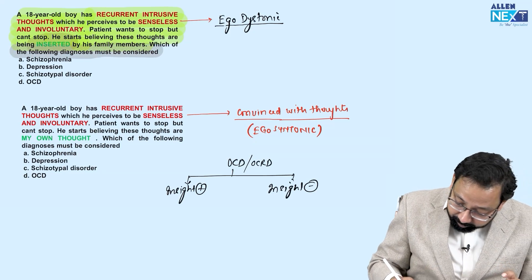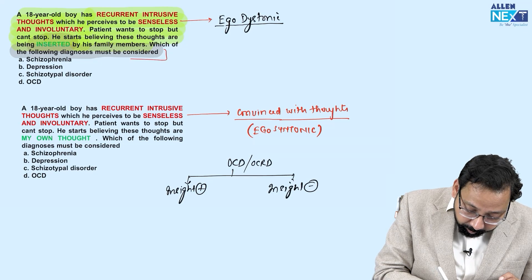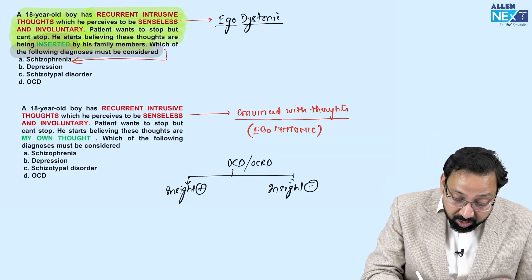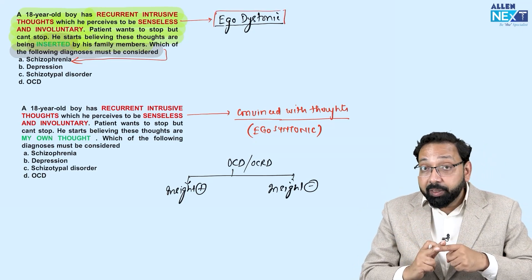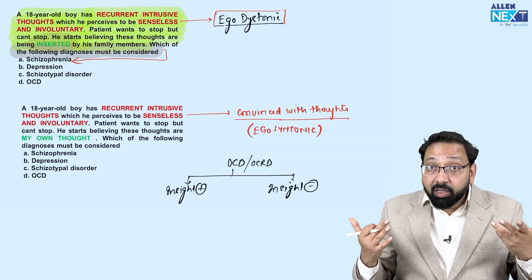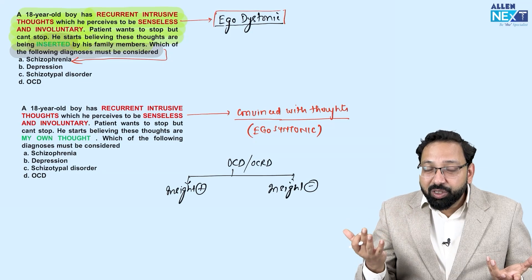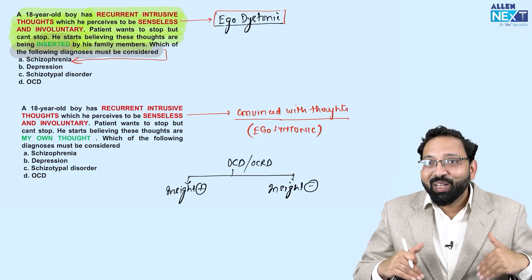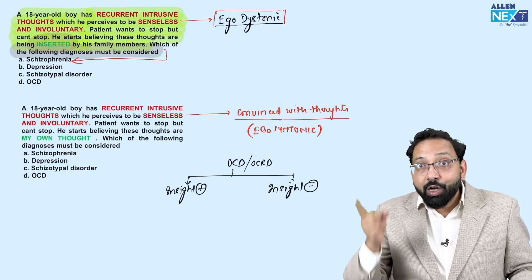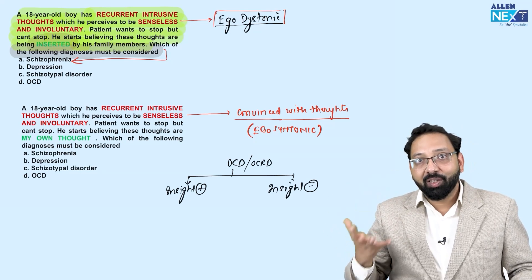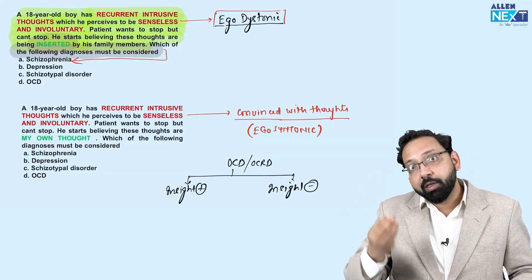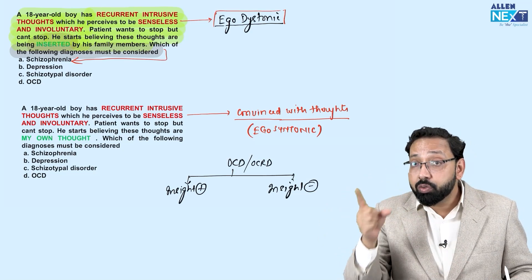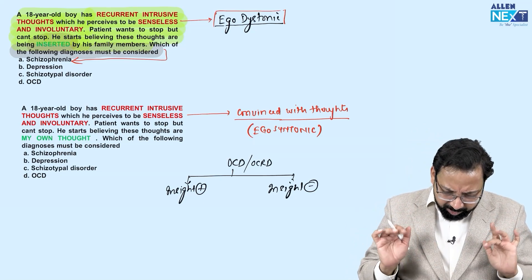The patient finding thoughts senseless means ego-dystonic — not agreeable to self. If a patient agrees with the thoughts, it is egosyntonic, just like delusions — a patient who believes they are the richest person agrees with that thought, making it egosyntonic. So the rule is: delusions are egosyntonic, obsessions are ego-dystonic.